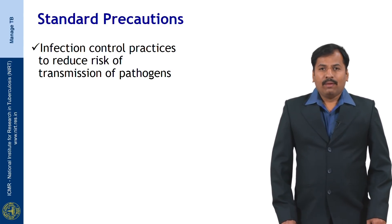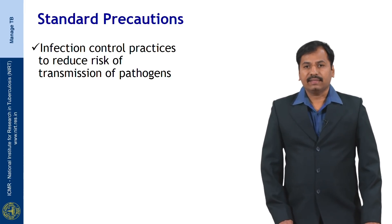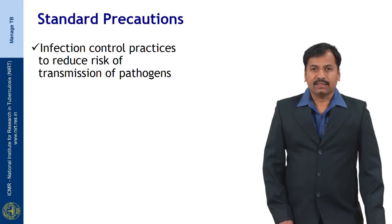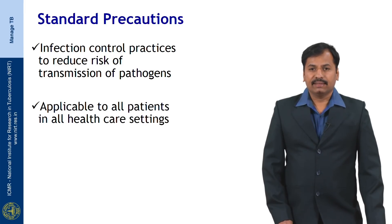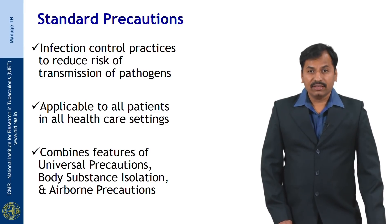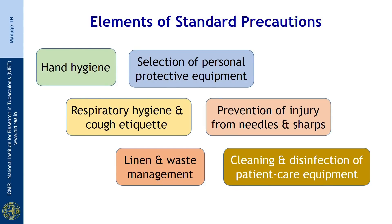Standard precautions for any infection control aim to reduce the risk of transmission of pathogens. They are applicable to all healthcare settings and combine the features of universal precautions, body surface isolation, and airborne precautions. The elements of standard precautions include hand hygiene, selection of personal protective equipment for healthcare workers and patients, respiratory hygiene and cough etiquette education, prevention of injury from needles and sharps, disposal of infectious material, linen and waste management, and cleaning and disinfection of patient care equipment frequently.